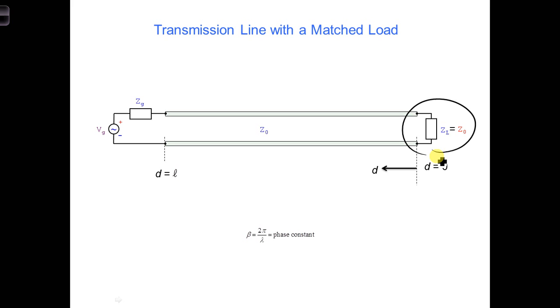We will only have one voltage wave traveling towards the load. Under these conditions, spend a minute coming up with an expression for the voltage along the transmission line shown here, as a function of both space and time. That is,